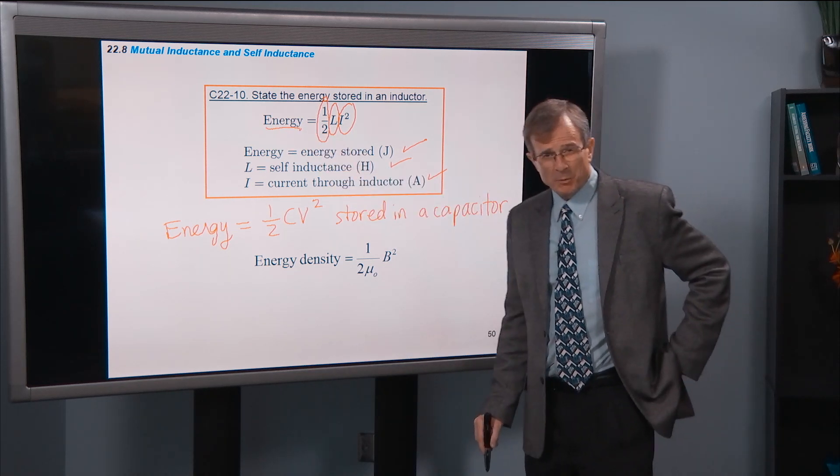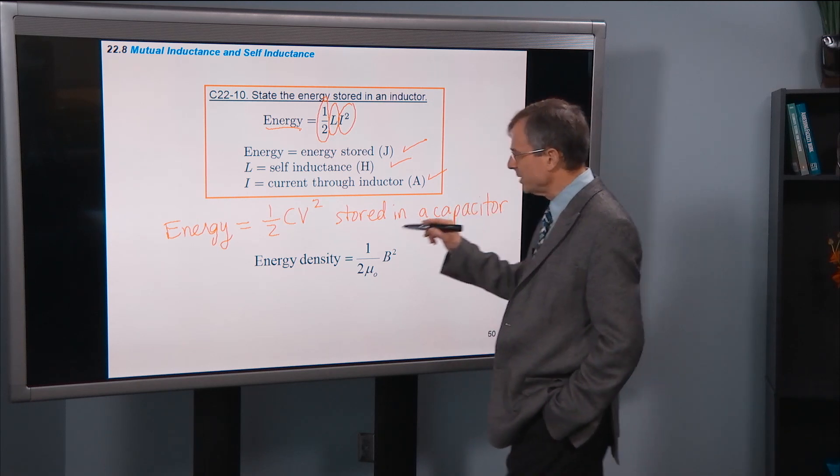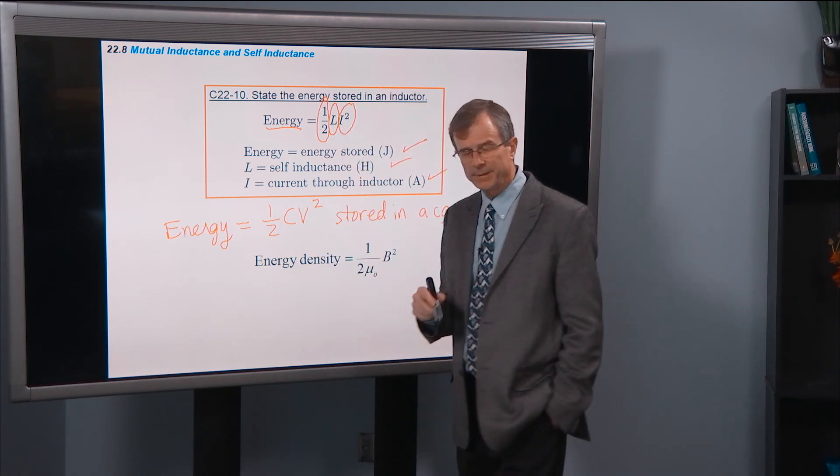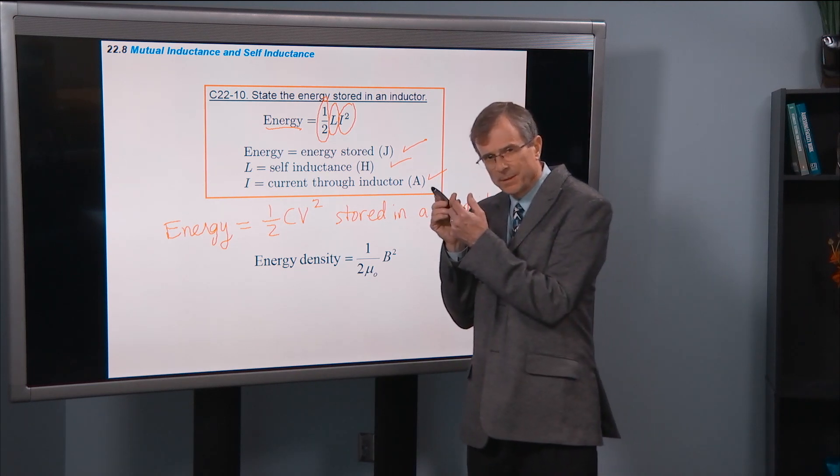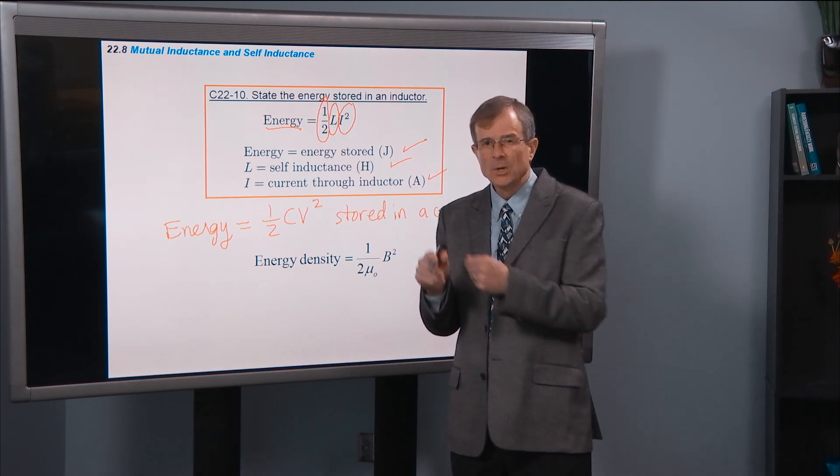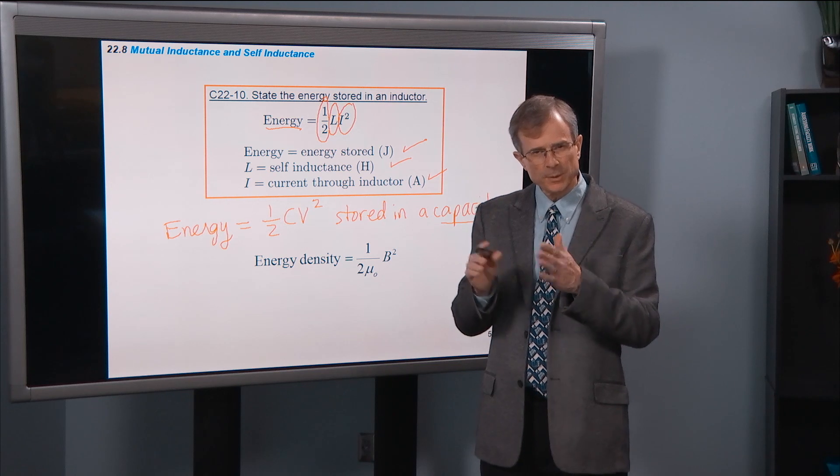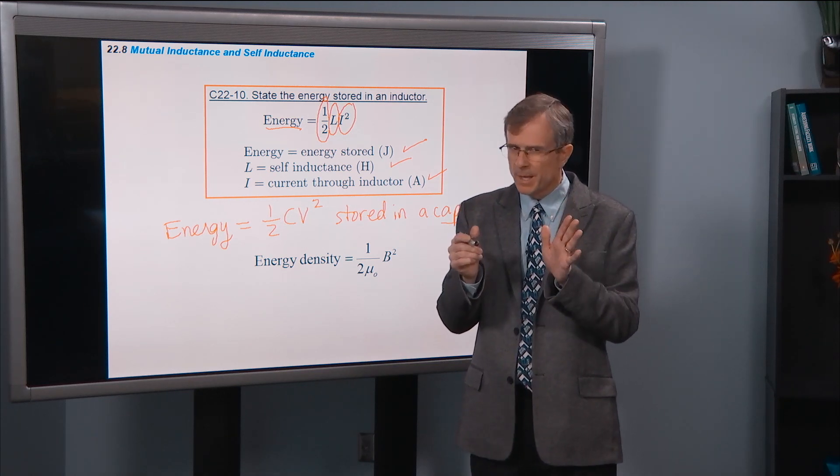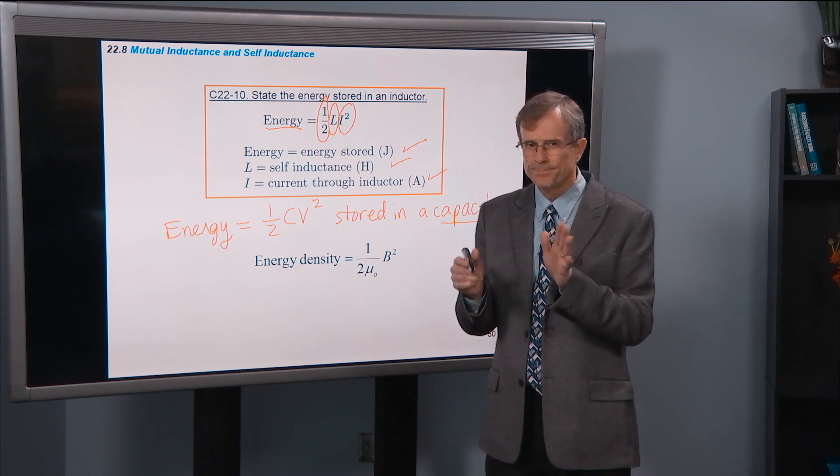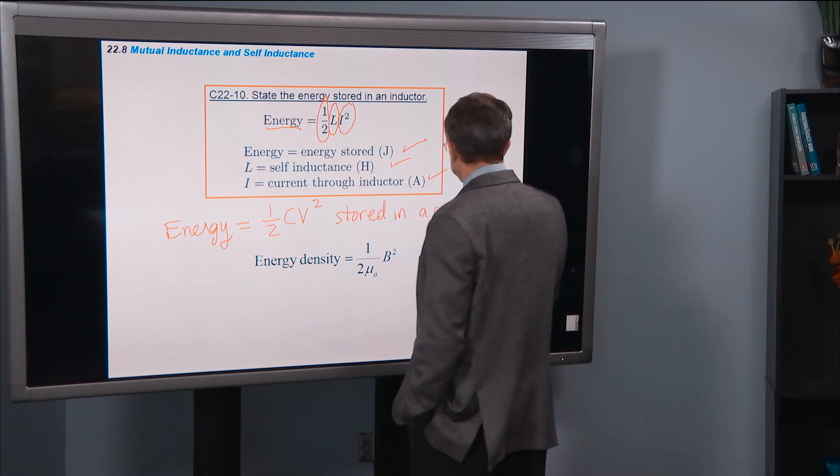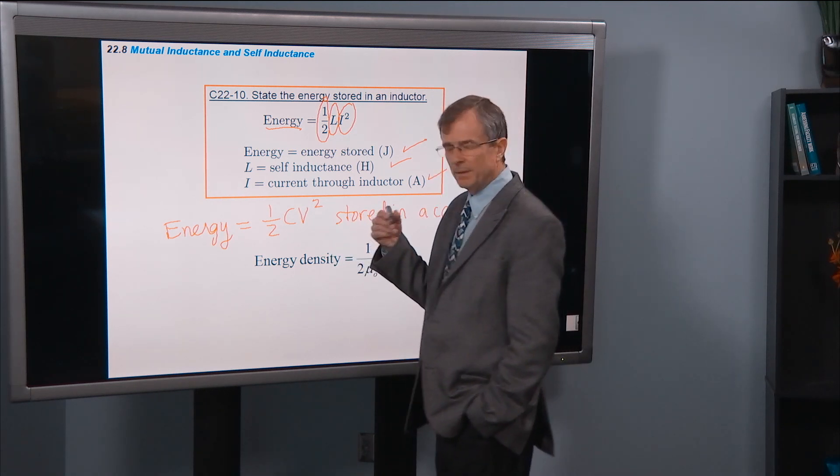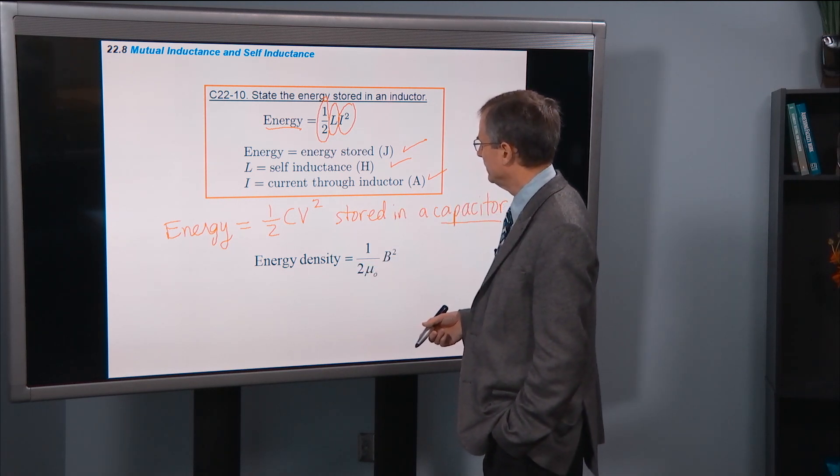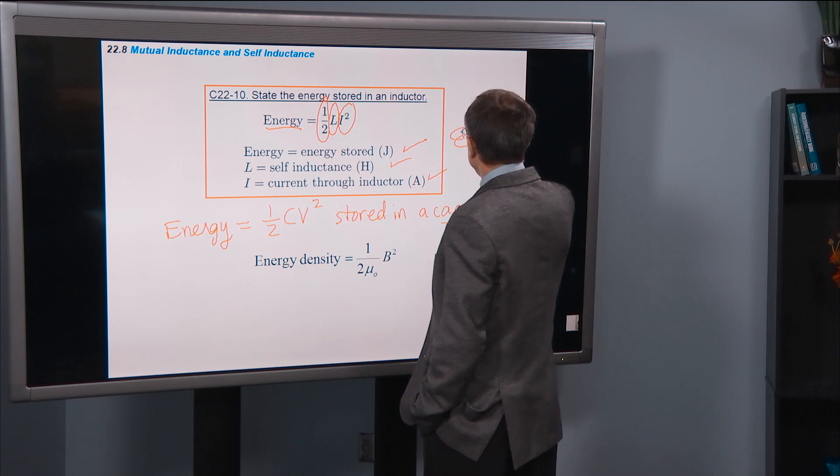Now, you might remember we talked about the fact that the energy stored in a capacitor can be thought of either being stored in the charge on the capacitor, or in the electric fields between the two capacitor plates. You can think about it being stored either way. With inductors, it's a similar situation. With an inductor, you have a coil, a wire, and you've got magnetic fields through that wire.